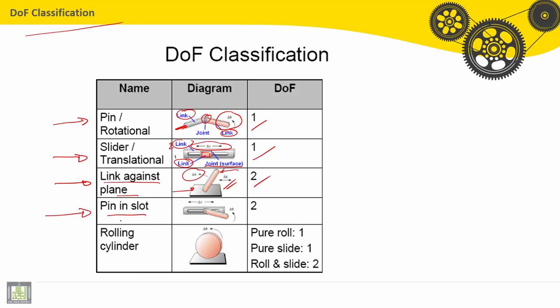For this type, pin in slot. This link is the ground. This link can make translation delta x or x, linear motion, and can make rotation around this axis of the pin, theta or delta theta. Then we find here 2 degrees of freedom: translation and rotation.